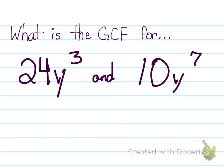Let's try this again. Between 24 and 10, what is the largest number that can divide into both of them? Absolutely right — it's two. And between the variable y cubed and y to the seventh, which one has the smallest exponent? That's y to the power of three. So my GCF will be two y to the power of three.